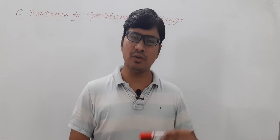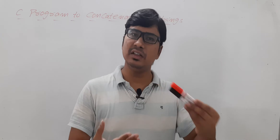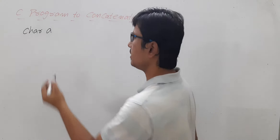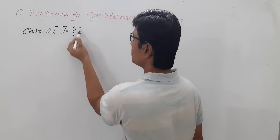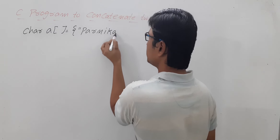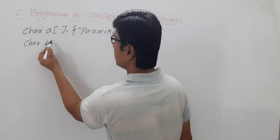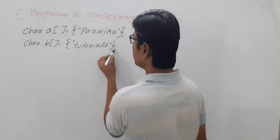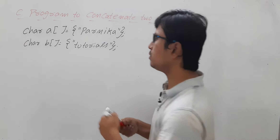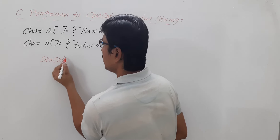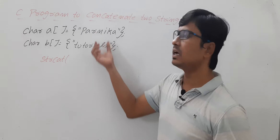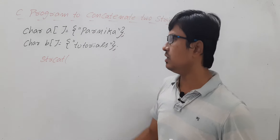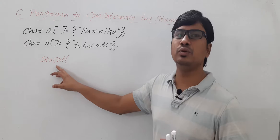First, let me discuss what string concatenation is, what function you have to use, and how it works. Let's say you have a character array A, not specifying the size, initialized with the string 'Parnika'. You have another character array B with the string 'Tutorials'. If you want to combine these two strings, you have to use a function called strcat. String concatenation is nothing but combining these two strings — so you should get the output as 'ParnikaTutorials' combined. The strcat function is used to concatenate two strings.